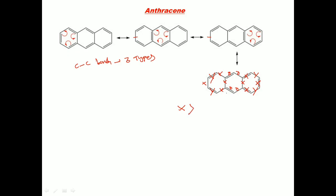Between Y and Z: the Y bond has four times double bond nature and one single bond nature, so Y has the least bond length. For the Z bond, two resonant structures show double bond character and two show single bond character. So the bond length order in anthracene is: X greatest, then Z, then Y least. Three types of bonds and four resonant structures.